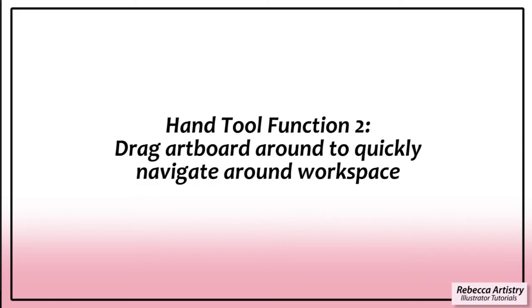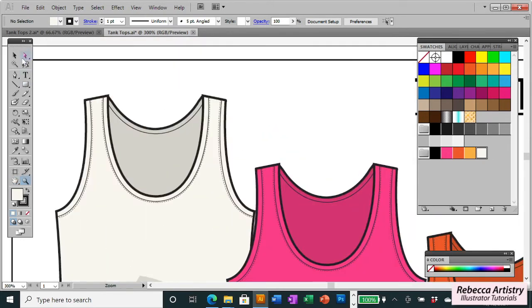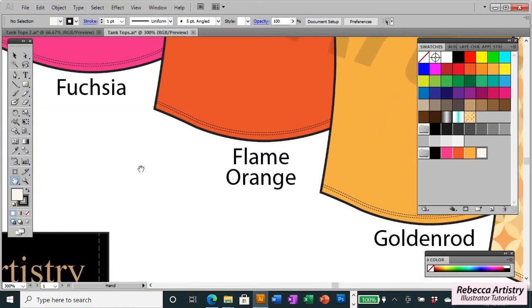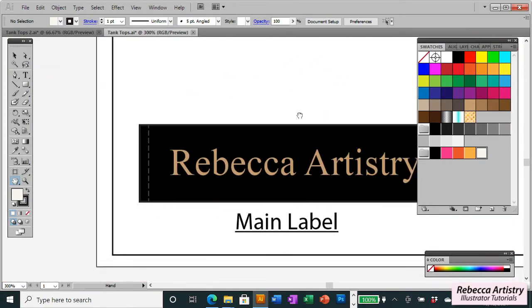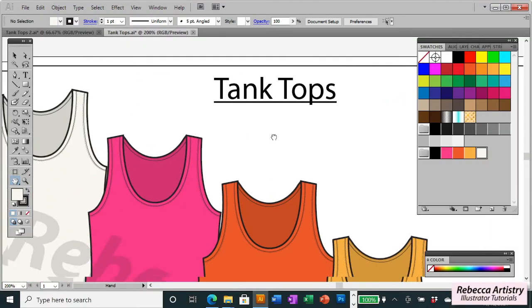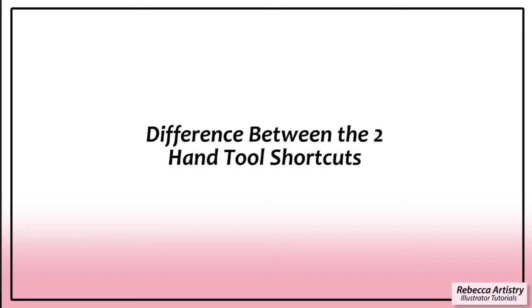The other function is that the hand tool allows you to drag your artboard around to any place you want. This can really come in handy because you're going to be working on certain parts of your artwork, but then you might want to quickly scoot over to another part of your artboard. So using the hand tool to move your artboard around makes that very quick and easy. You select your hand tool, click your mouse down once, and you'll see that the hand tool changes — it looks like it's grabbing onto your paper. When you move your mouse while holding it down, it enables you to drag your artboard around. Simple, right?